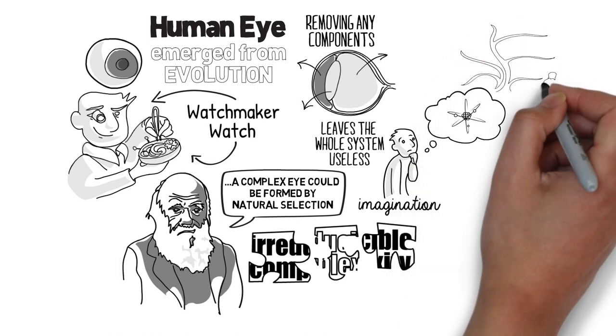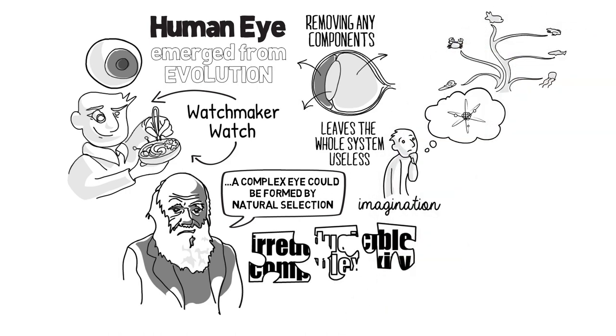Throughout the natural world there are examples of creatures that show just how the human eye could have developed incrementally rather than all at once.